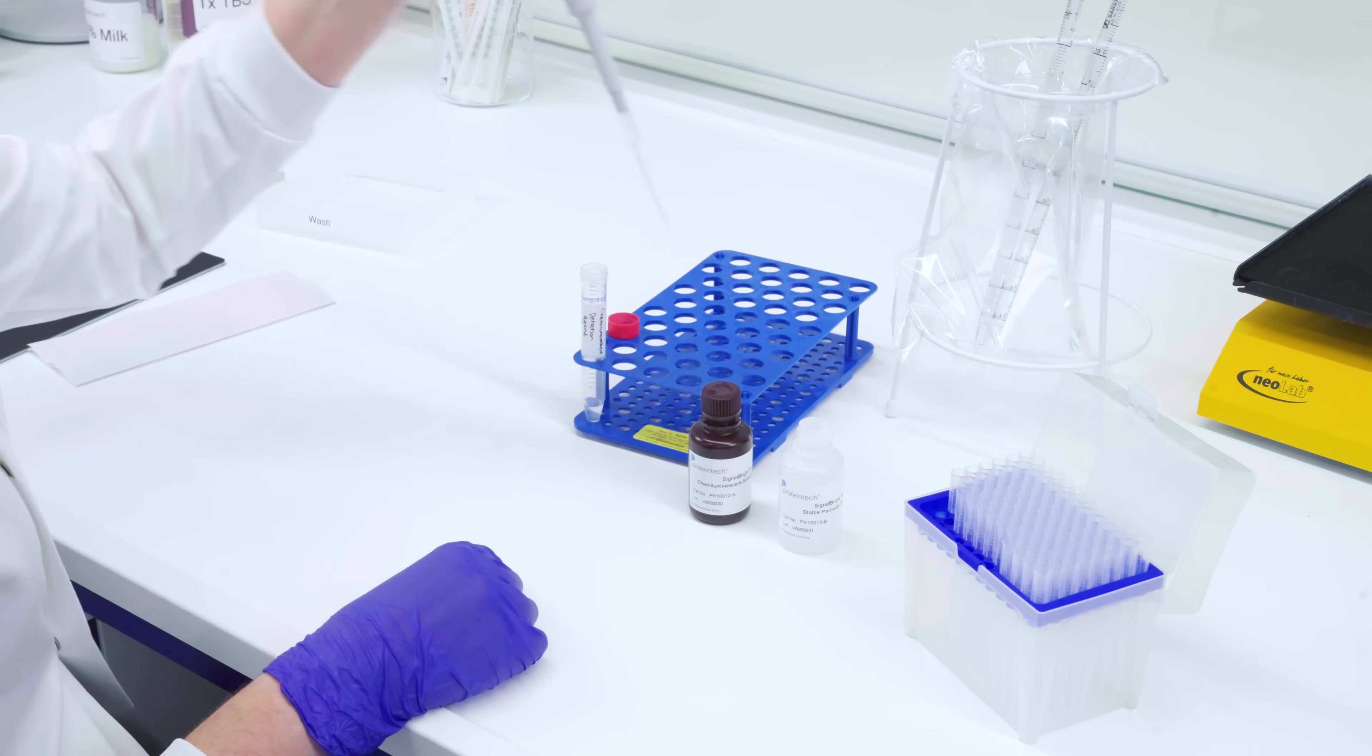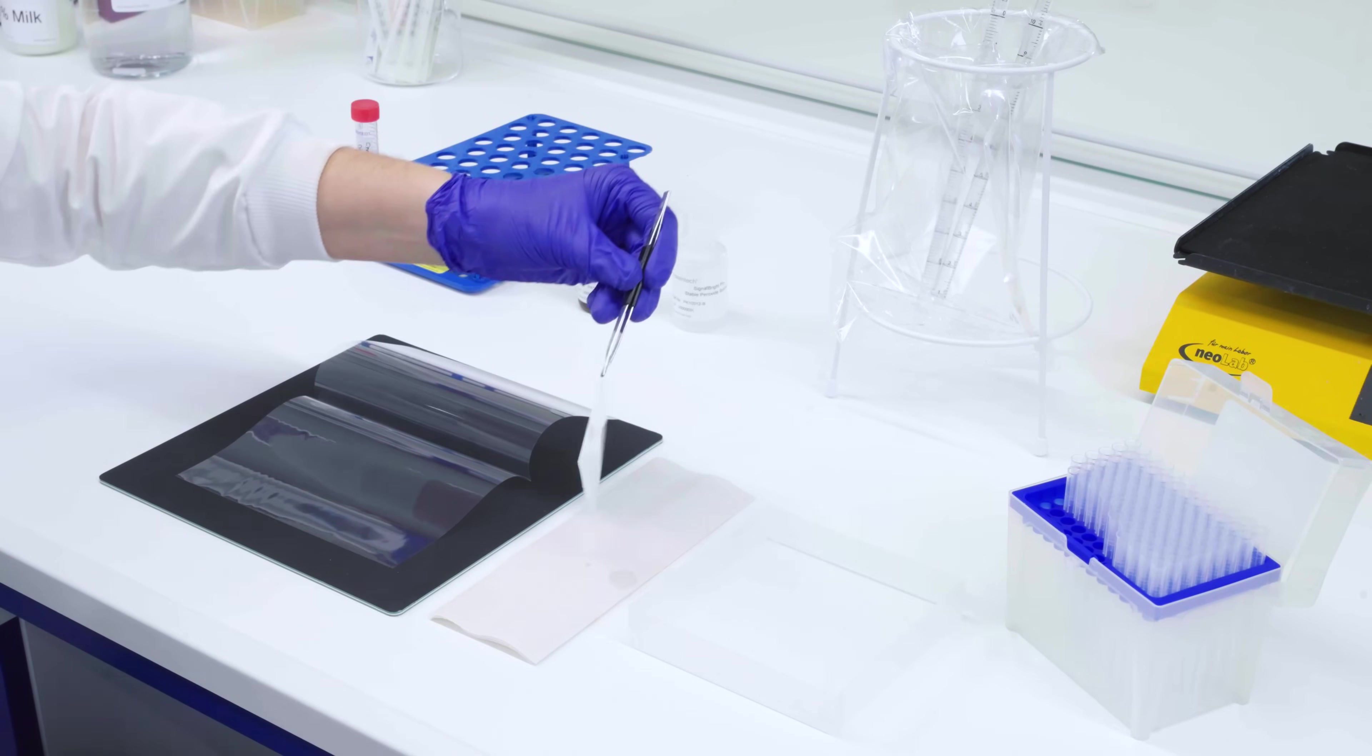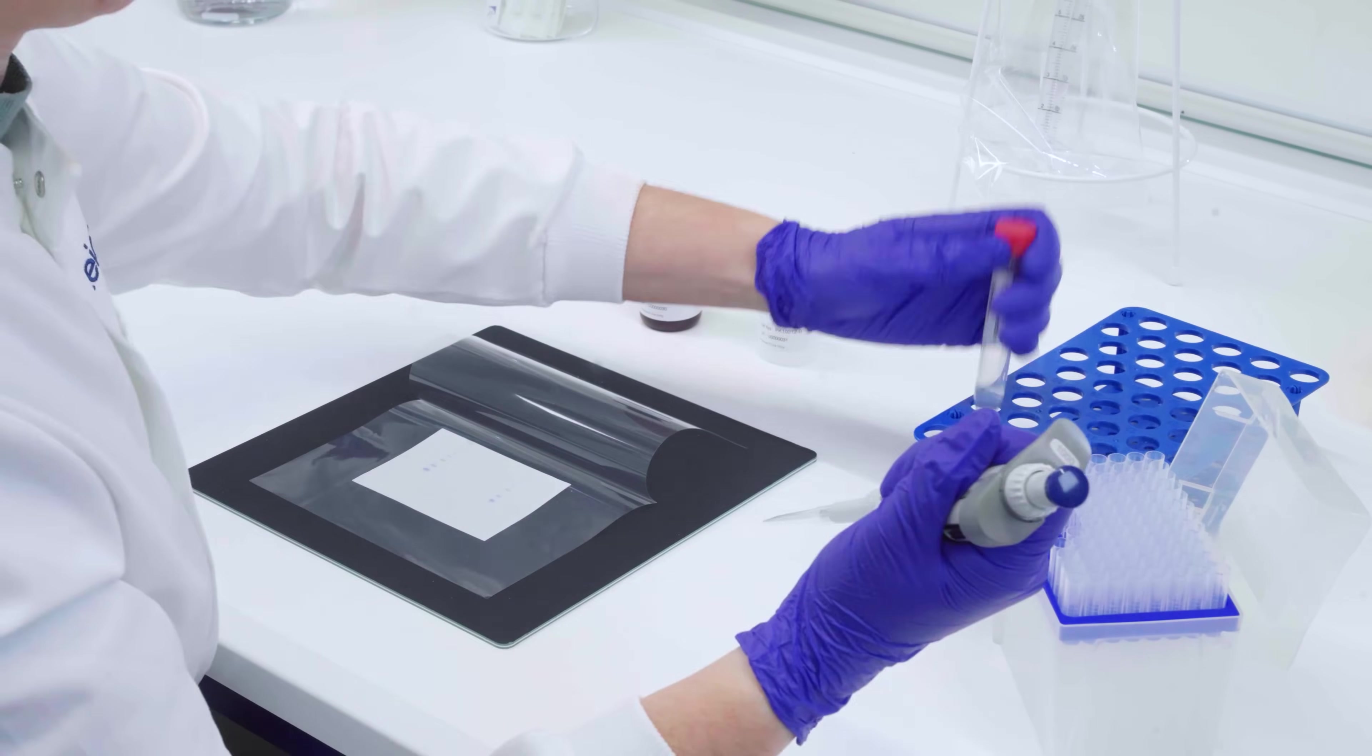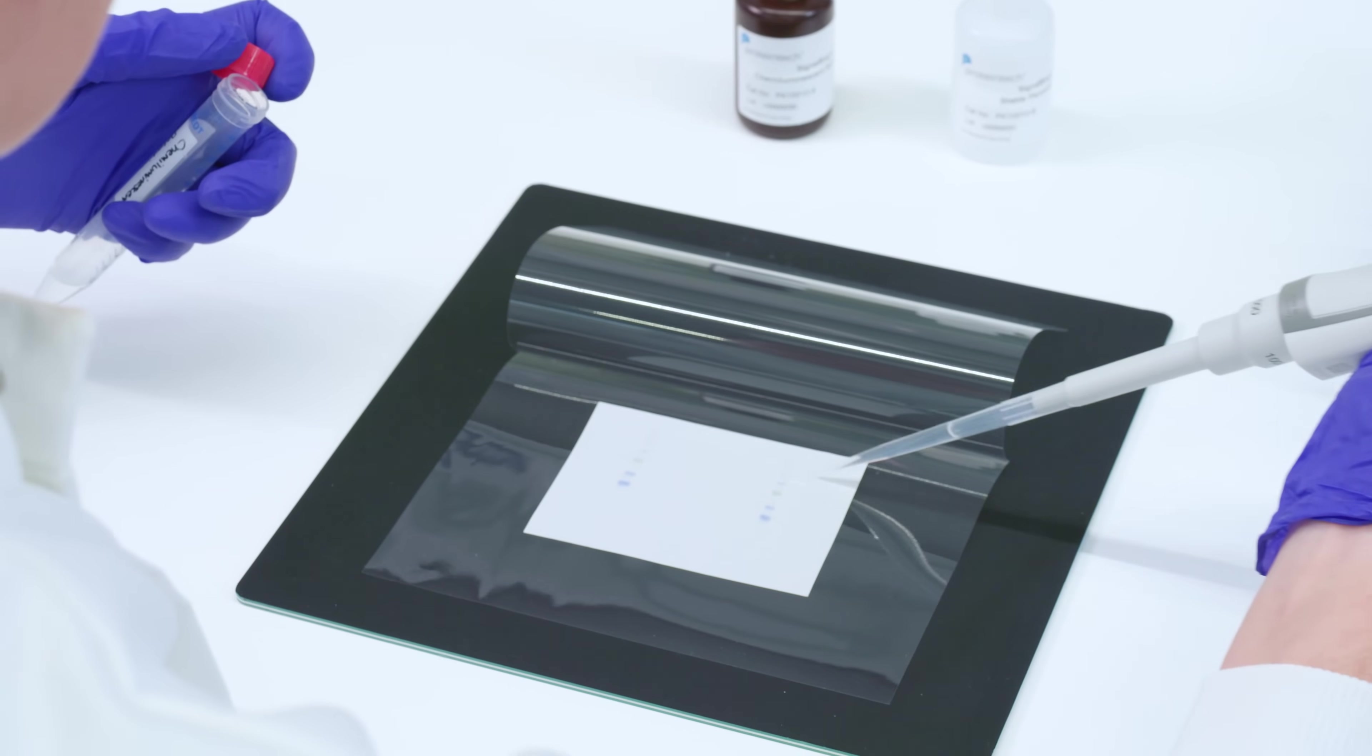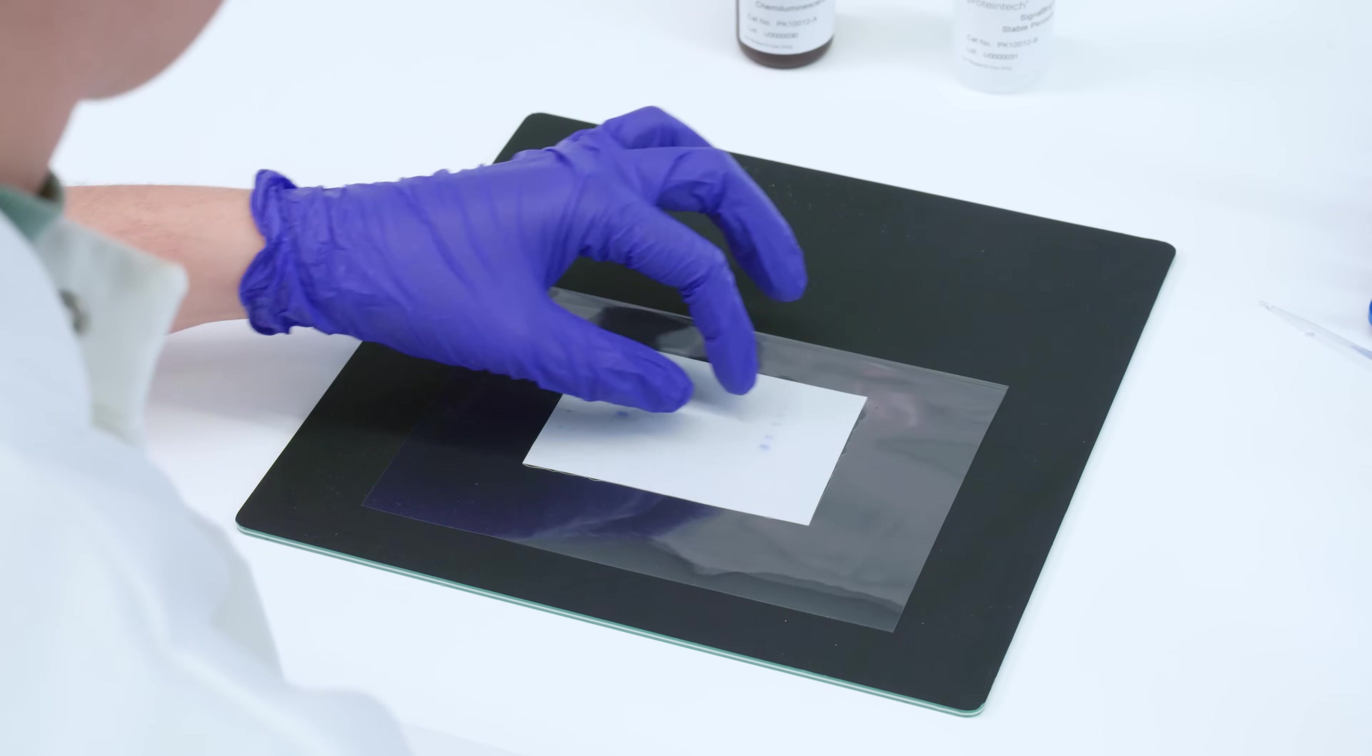Before addition to the membrane, the chemiluminescent substrate must be prepared by combining the solutions at a 1 to 1 ratio. Place the membrane onto a clean, dry imaging tray, making sure to blot off the residual wash buffer. Add the chemiluminescent substrate to the membrane, ensuring equal distribution across all lanes. The substrate is oxidized by the conjugated enzyme, resulting in emitted light that can be detected by either X-ray film or a digital imager.